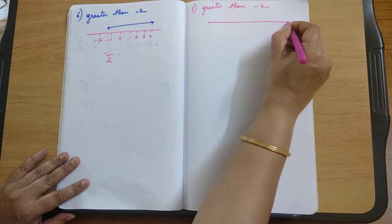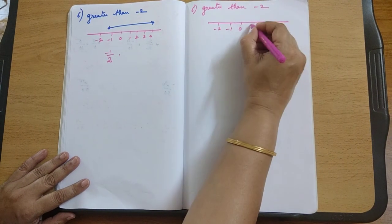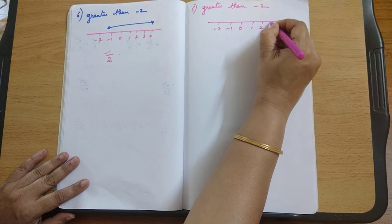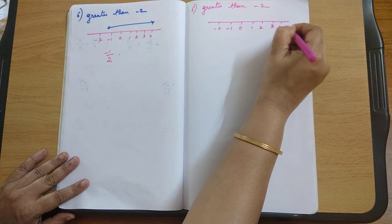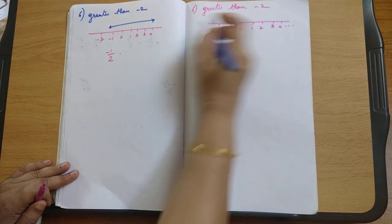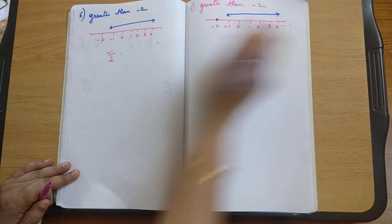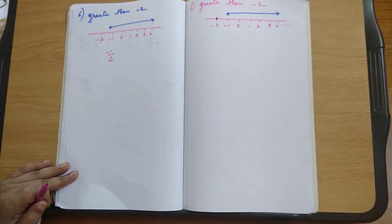You know the number line: 0, minus 1, minus 2 and so on. The other side you have the positive integers and so on. Now this is minus 2. So any number beyond this in the number line is going to be greater than minus 2.